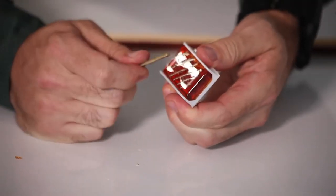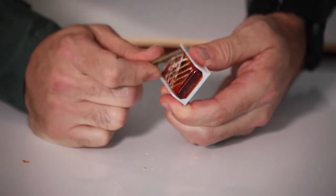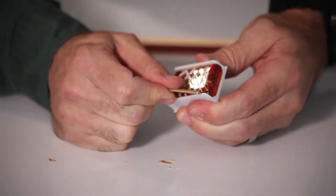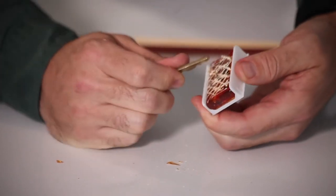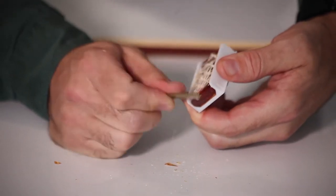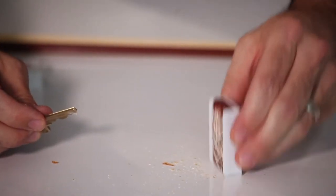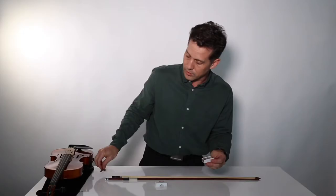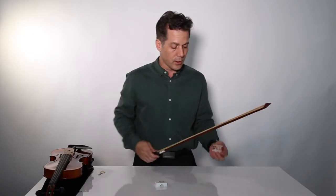Don't worry if a little rosin chips off. This is going to make a little bit of a mess here. You want to just rough up the surface so that the rosin can conveniently go onto the bow hairs.